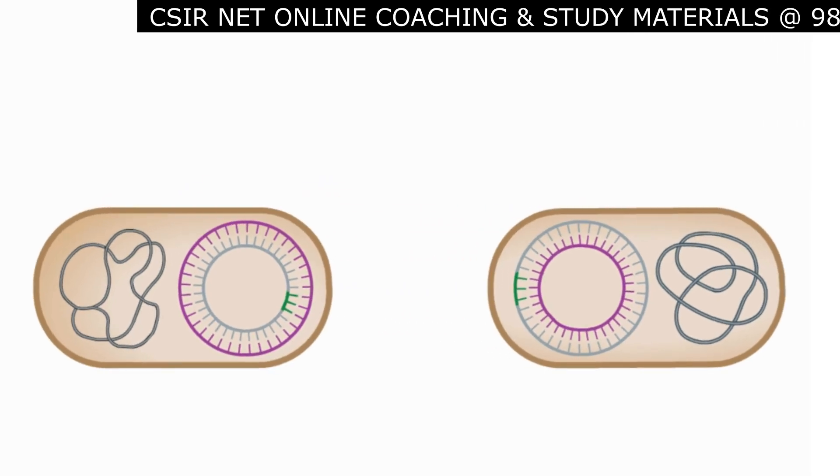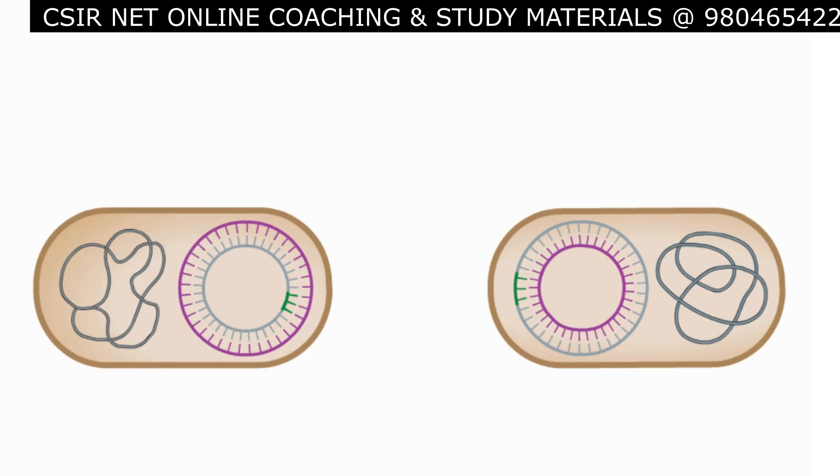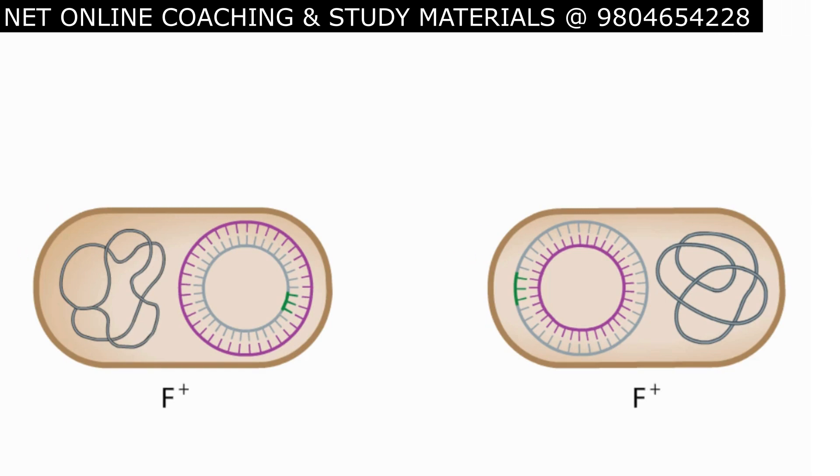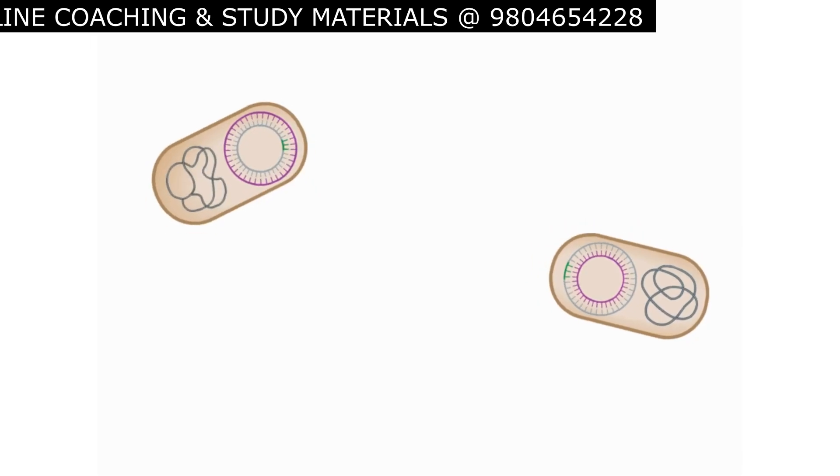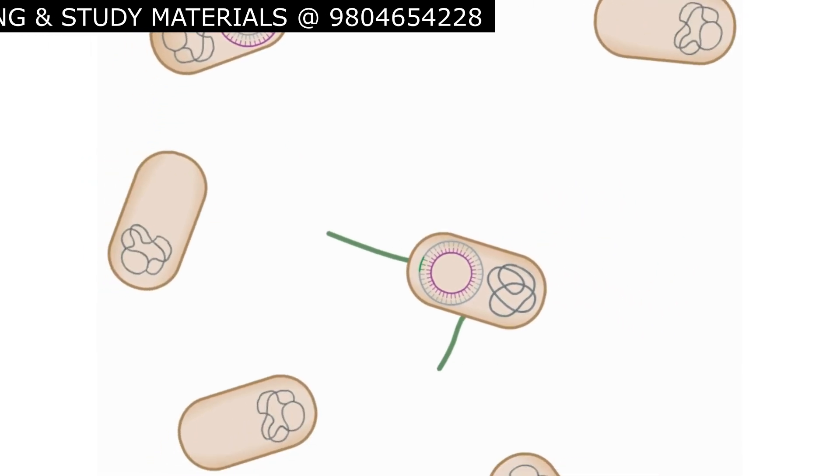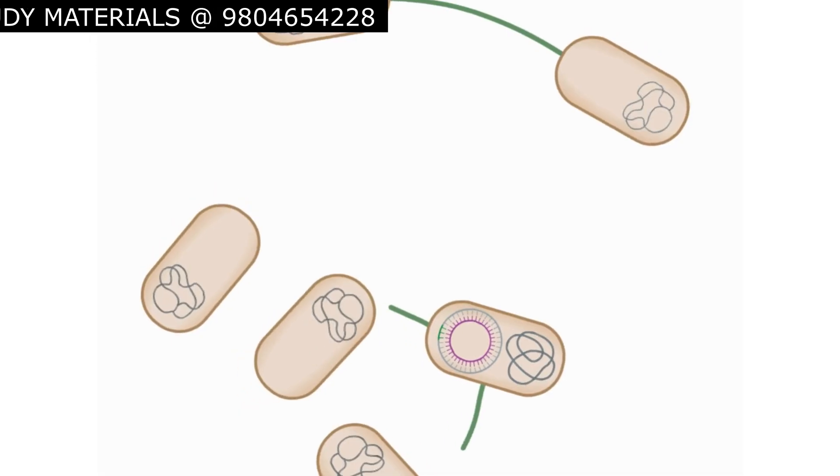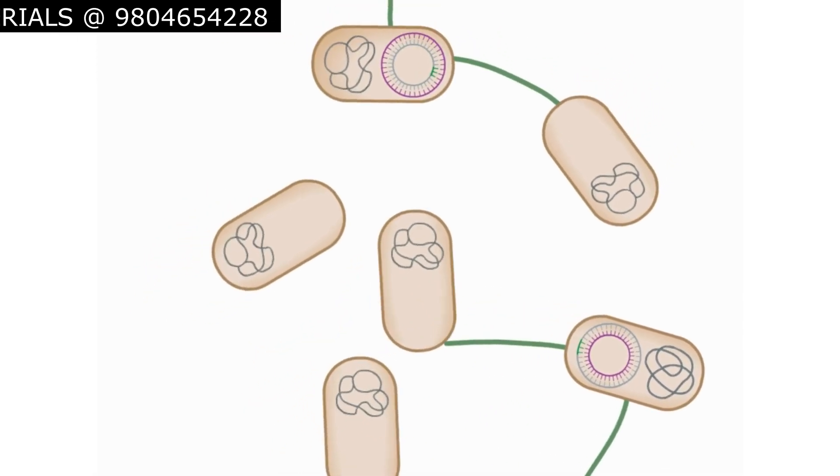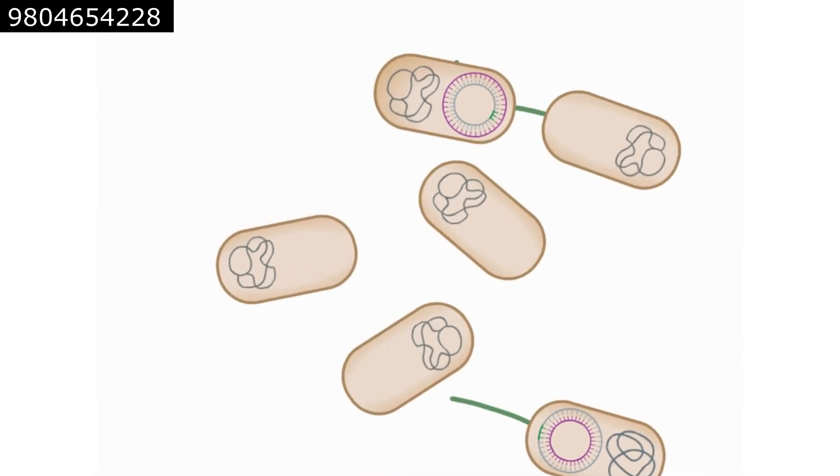The F minus cell has been converted to an F plus cell, that is now capable of conjugating with another F minus recipient. Consider that if the plasmid carries a gene for antibiotic resistance, the resistance trait can quickly spread through a bacterial population.